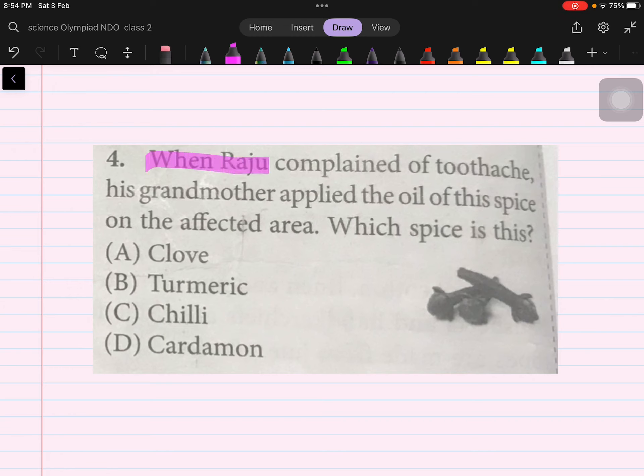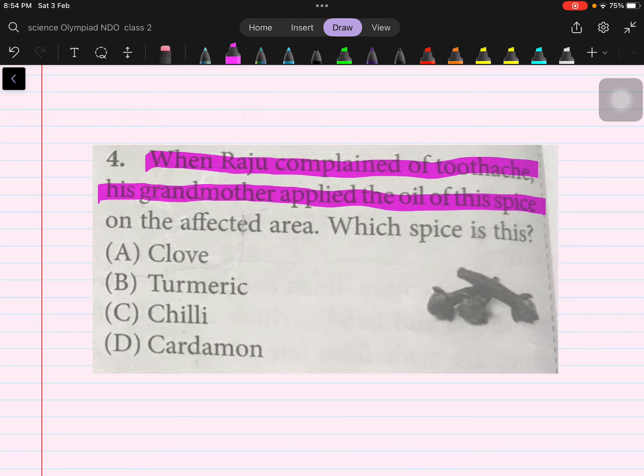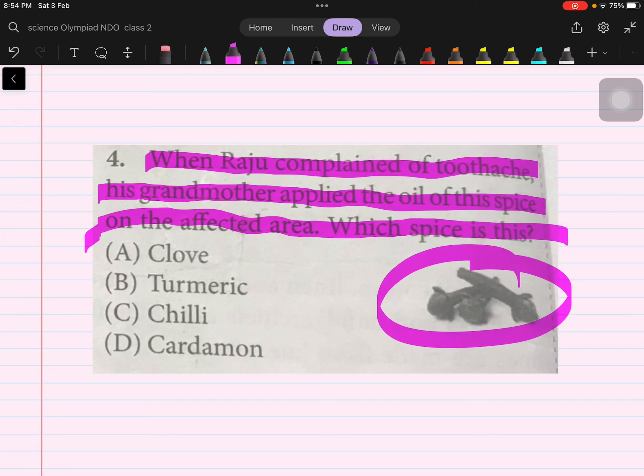When Raju complained of a toothache, his grandmother applied the oil of a spice on the affected area. Which is the spice? This is a clove. What will we bubble? A.